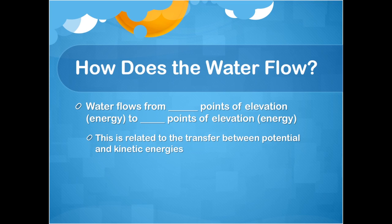We can answer this by completing the statement: water flows from blank points of elevation or energy to blank points of elevation or energy. Elevation and energy are used interchangeably because the answer deals with potential and kinetic energy transfer. Water flows from high elevations to low elevations. So how do we get elevations?